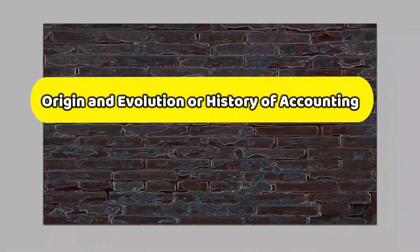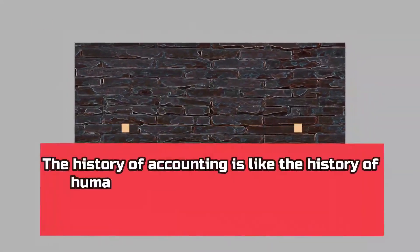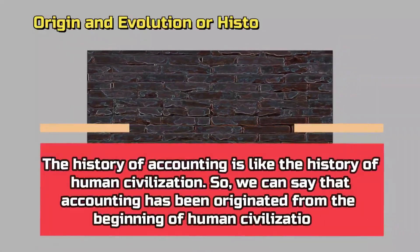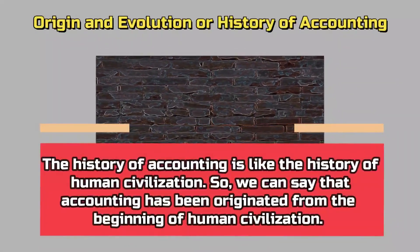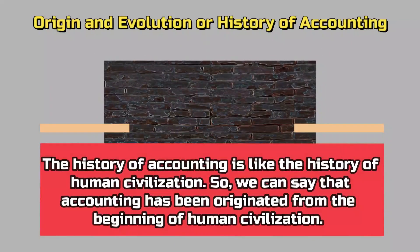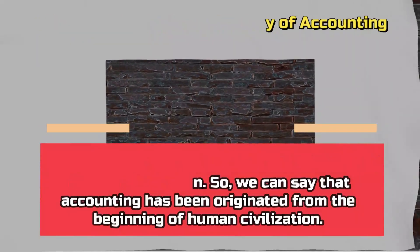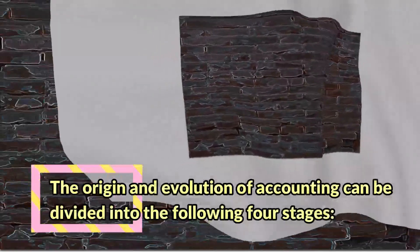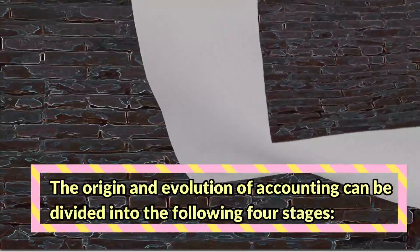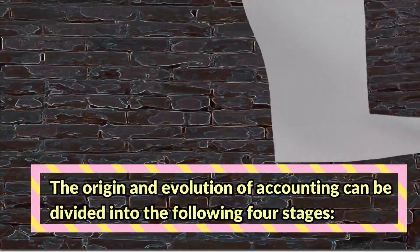Origin and evolution, or history, of accounting. The history of accounting is like the history of human civilization. So we can say that accounting has been originated from the beginning of human civilization. The origin and evolution of accounting can be divided into the following four stages.